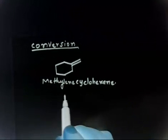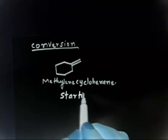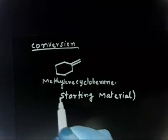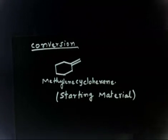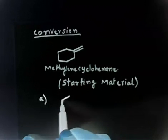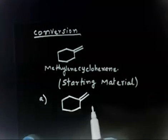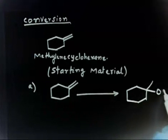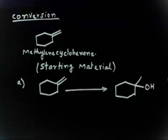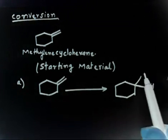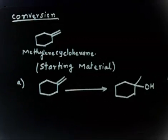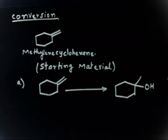Using this starting material, you have to prepare the following compounds. The first is a one-step reaction — you know the answer. What has happened here? You have two hydrogens at one carbon and three hydrogens at another. One hydrogen is added at one position and OH is added at the other. This is your hydration reaction.